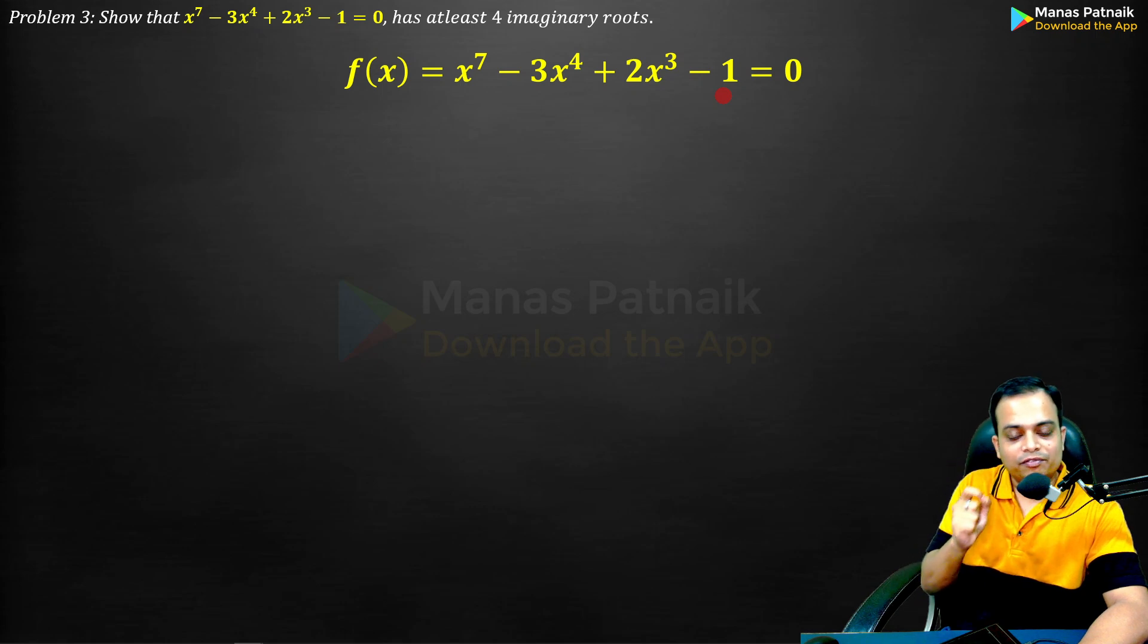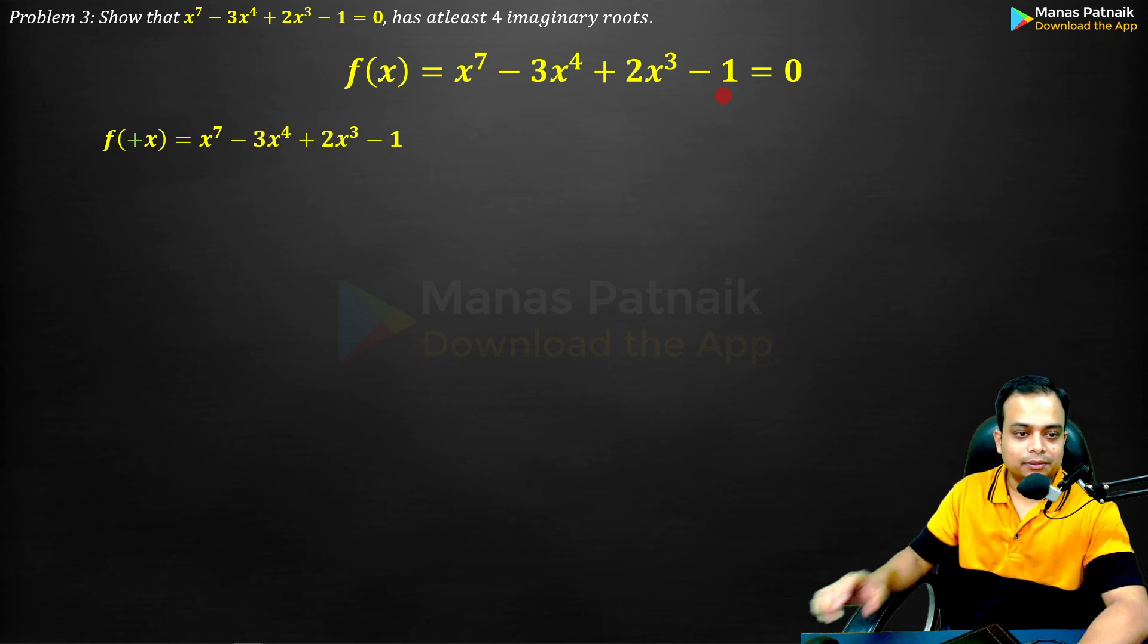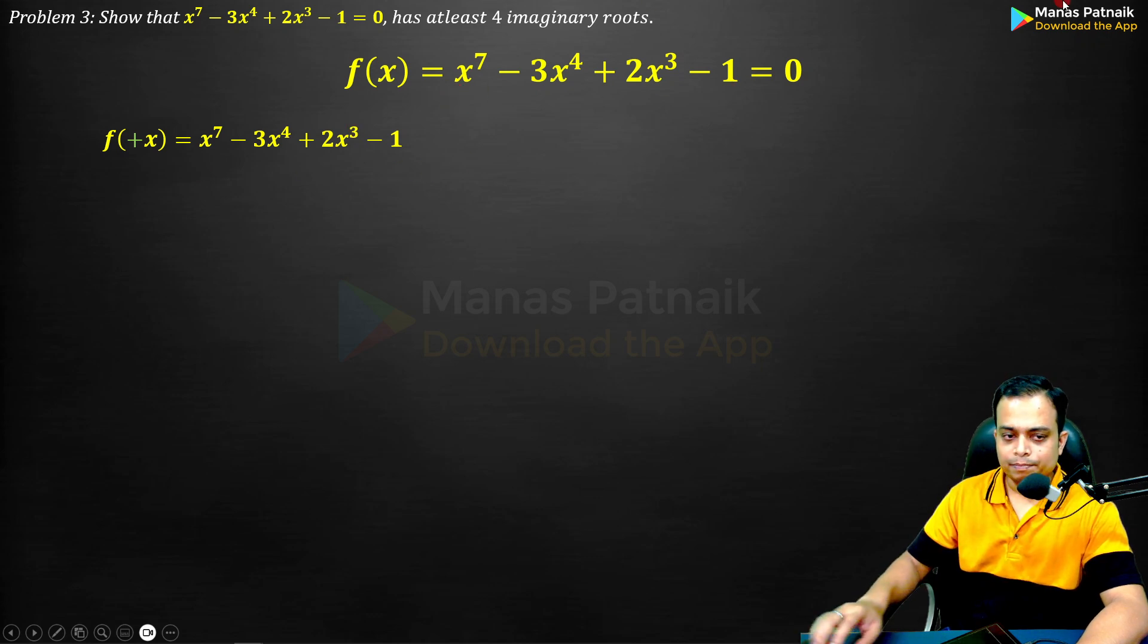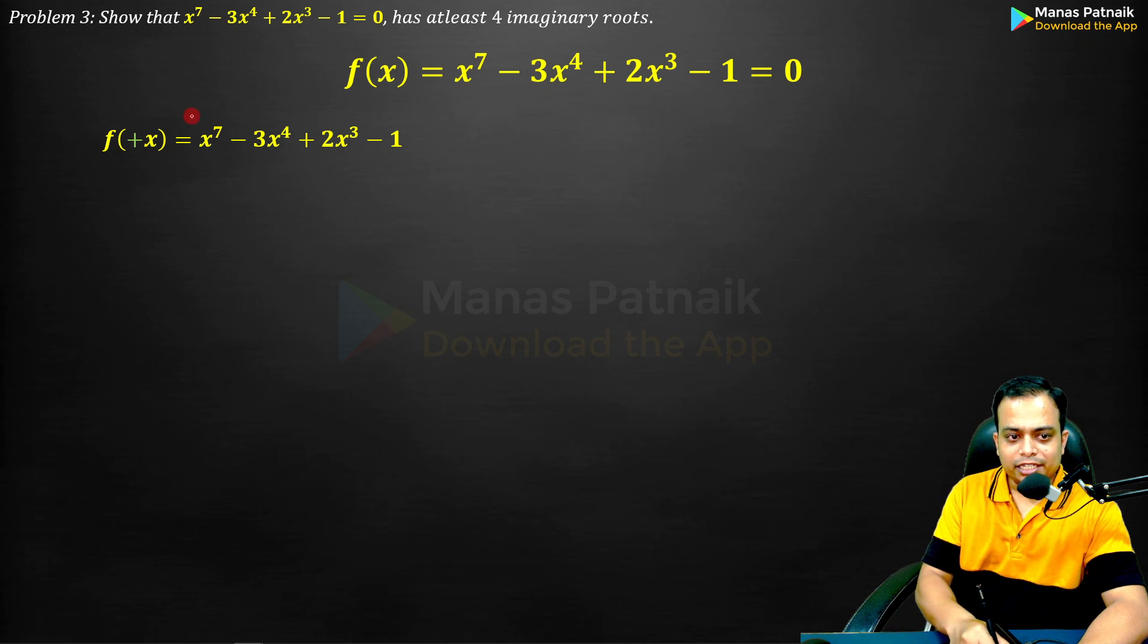The first investigation is you have to work out f of plus x. Simply replace x with plus x. What will happen? Nothing will happen, no change. The entire equation will be of the same form. If you watch this, x^7 has a positive sign, 3x^4 has a negative sign. Let me write term by term signs: plus, minus, then plus and minus.